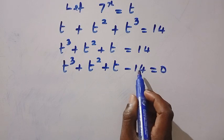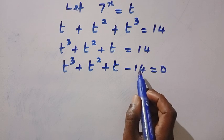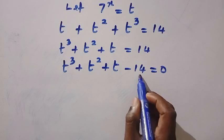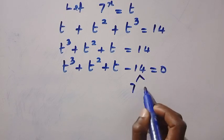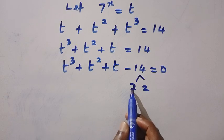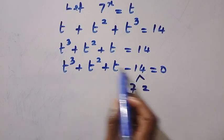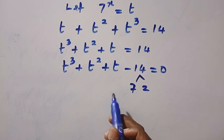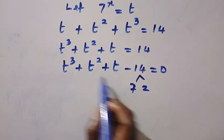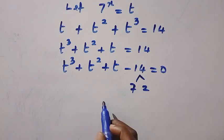Looking at these constant values, we have 14 here. If we look for some factors that can go in 14 without a remainder, let's say we have 7 and 2. If we try and substitute 7 in this, we are going to have a very big number. But if we try and substitute 2 in this, it's possible that we have the accurate answer for all these to be equal to 0.